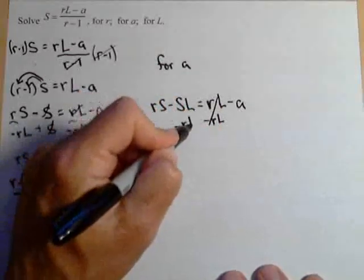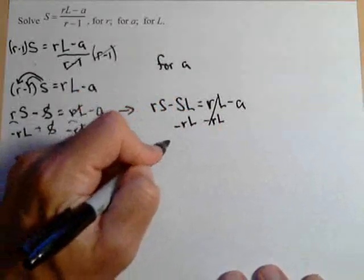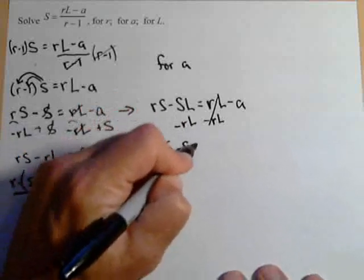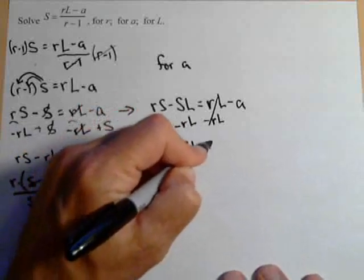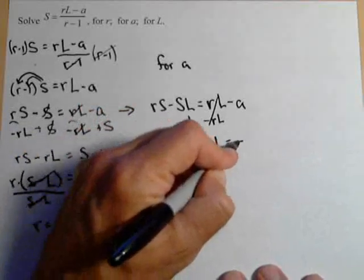We get RS minus SL minus RL equals negative A.